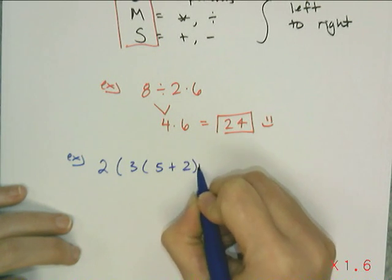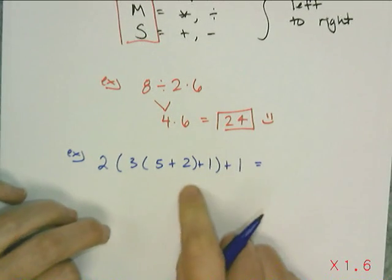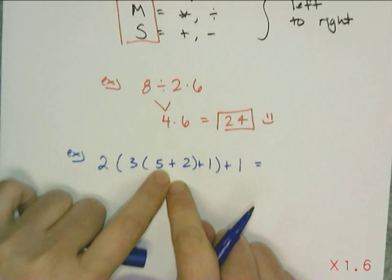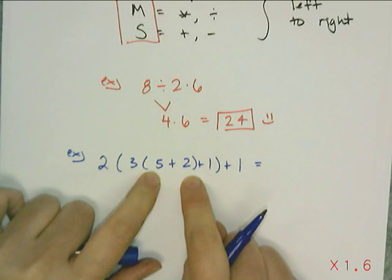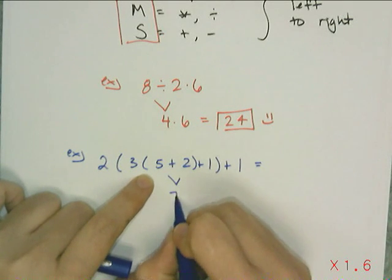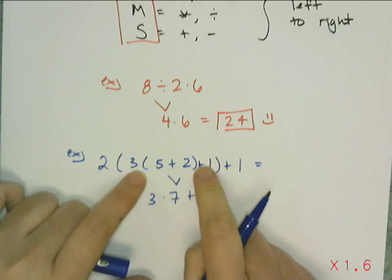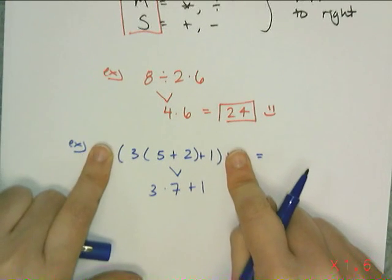I can nest grouping symbols inside of other grouping symbols, and what I have to remember is that I need to work from the inside out. So I need to find the innermost grouping symbol, which in this case is 5 plus 2, and I'm going to simplify it to a 7.